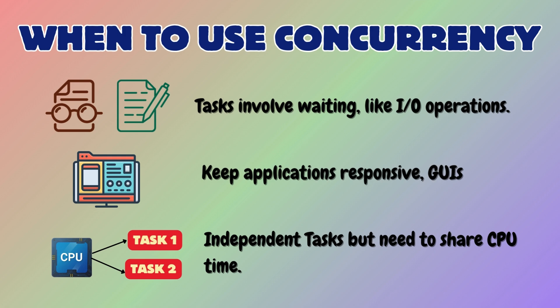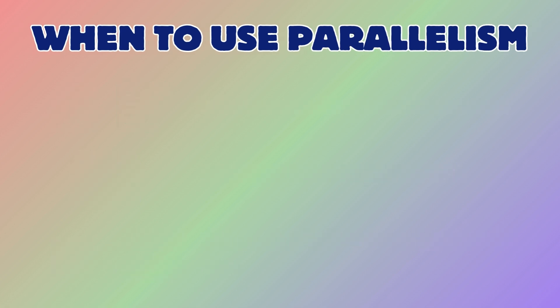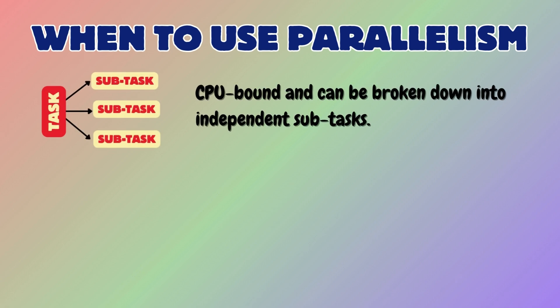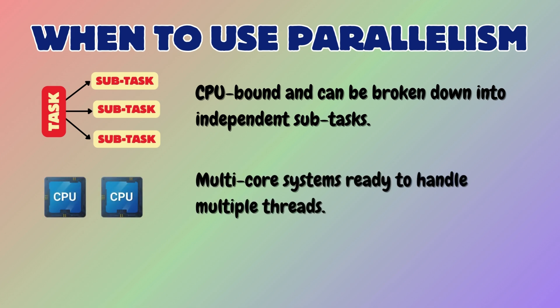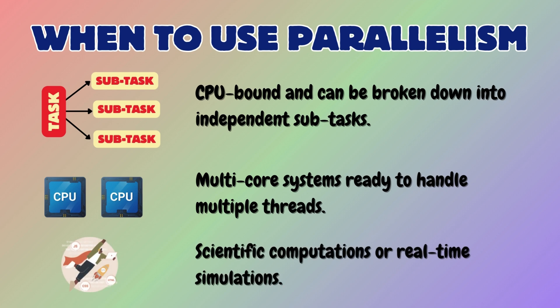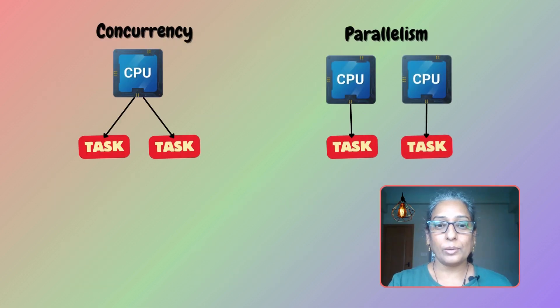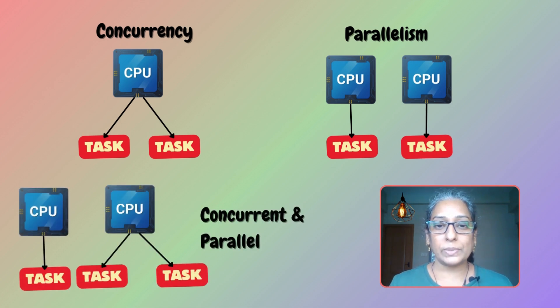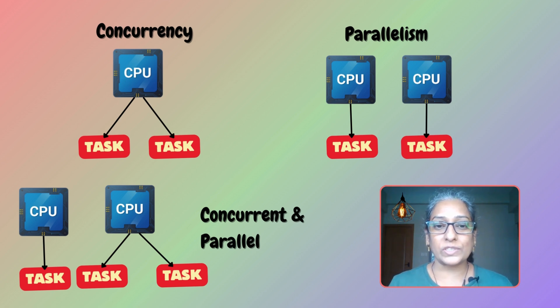Use concurrency for tasks that are independent but need to share CPU time — this can happen in both single-core and multi-core systems. Use parallelism when tasks are CPU-bound and can be broken down into independent sub-tasks, when we have multi-core processors ready to handle multiple threads, or when performance is critical such as in scientific computations or real-time simulations. Multi-core systems support both concurrency and parallelism, so it's not always either-or — they can coexist.